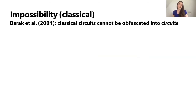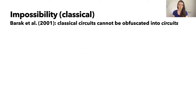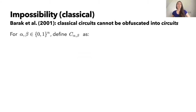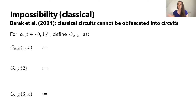I'll explain the details of this impossibility result because our result will be a generalization of it. Barak et al. showed that classical circuits cannot be obfuscated into circuits; their proof also worked for general classical objects, but let's focus on the circuit case. We're going to define a family of circuits parametrized by α and β that will be unobfuscatable. The circuit is defined in three different cases determined by the first digit of the input — the numbers one, two, and three are really just arbitrary selectors. We can ignore the fact that the cases have different input lengths, since inputs can be padded appropriately for uniform inputs.